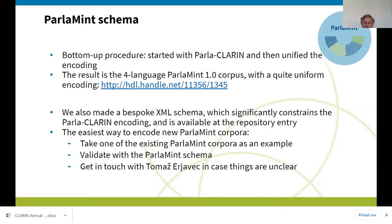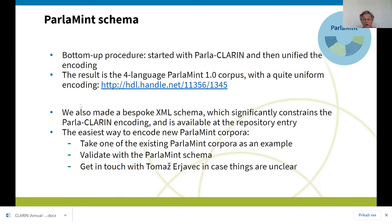The schema is also available together with the corpora on the handle shown here. Now that we have these four corpora, at least to me the easiest approach is to look at an example and do whatever they did. We have four examples, so the easiest way to encode your corpora is to look at one of the example corpora, more or less copy what is there except for the actual content, and then validate with the ParlaMint schema to check if everything is okay.